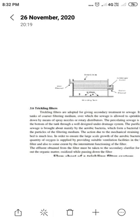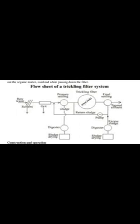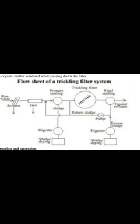Next we will see trickling filters. Trickling filters are adopted in treatment plants after the primary treatment for the secondary treatment of wastewater. They are mainly used after the removal of all floating materials, grease, and oils — primarily to remove the bacteria present in the sewage.